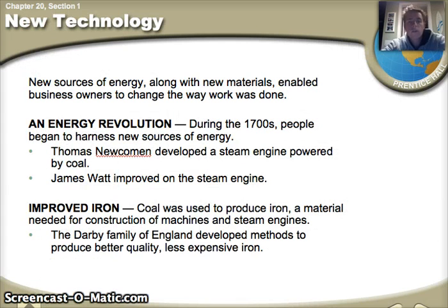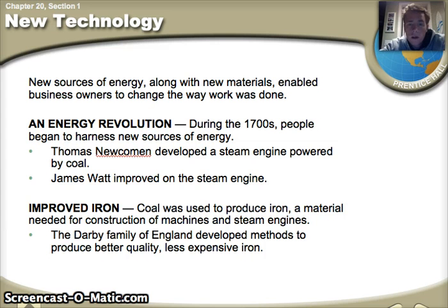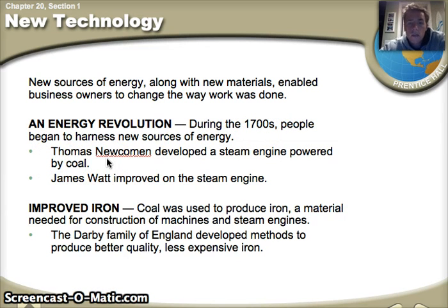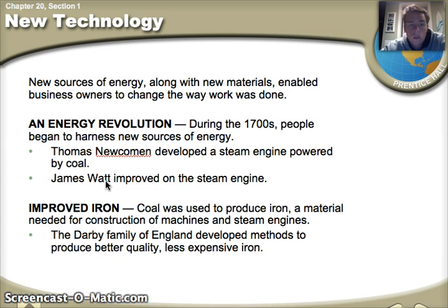We have new sources of energy and new materials, which is going to allow business owners to change the way work is done — work is going to be done more rapidly and they'll be able to produce way more products. We have important people like Thomas Newcomen, who develops a steam engine powered entirely by coal, and James Watt, who becomes famous for improving on the steam engine and making it more efficient, actually used in locomotives as we know it today.